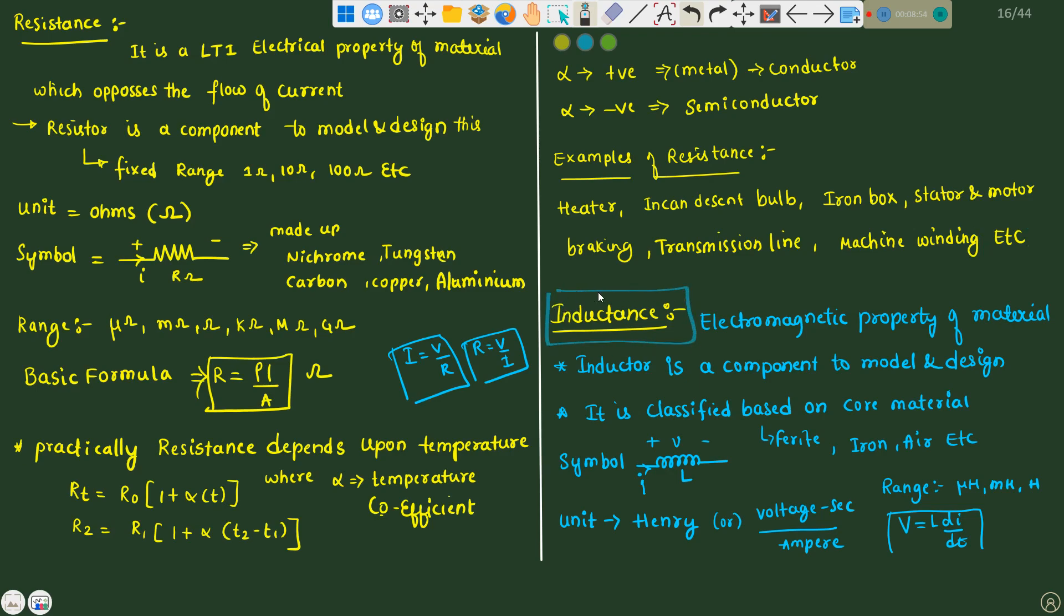If we talk about inductance, inductance is the electromagnetic property of a material which stores the energy in the form of electromagnetic field. Inductor is a component. It is modeled and designed as per our requirement, and it is classified based upon core material: ferrite core, iron core, or air. Symbol is represented like this. Unit of inductance is Henry or volt second per ampere, and range lies from micro-Henry, milli-Henry, Henry. This is V equals to L di by dt kind of Ohm's law.